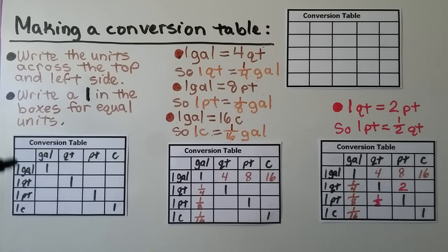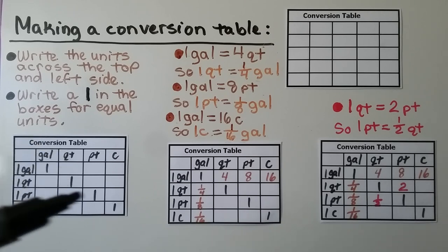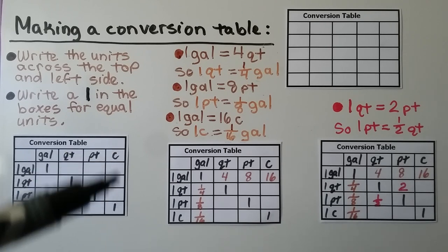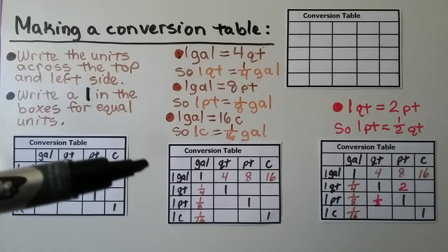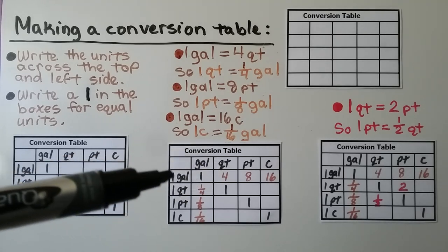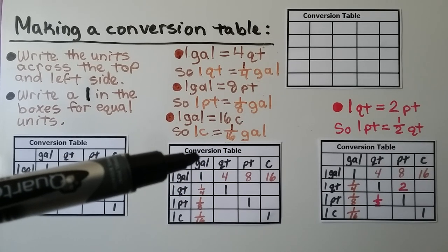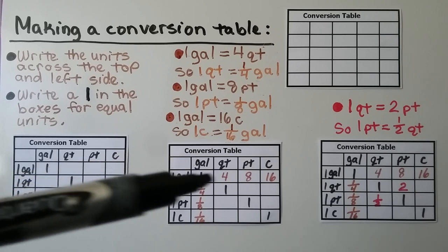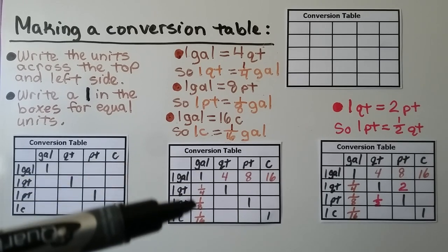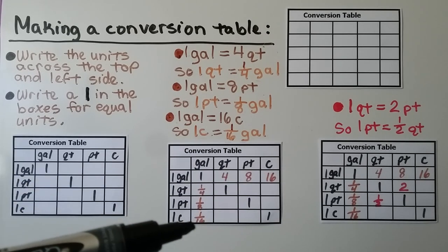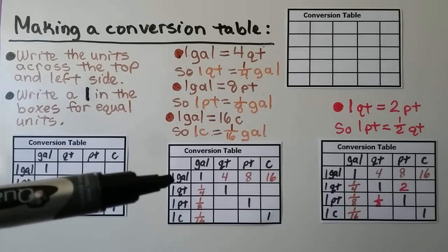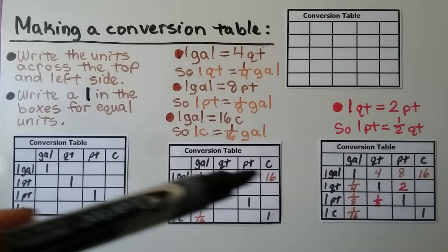We write a one in the boxes for equal units — one gallon equals a gallon, one quart equals a quart, one pint equals a pint, one cup equals one cup. Then: one gallon is four quarts, so one quart is one-fourth gallon. One gallon is eight pints, so one pint is one-eighth gallon. One gallon is 16 cups, so one cup is one-sixteenth of a gallon.